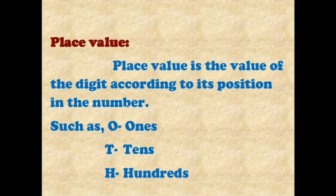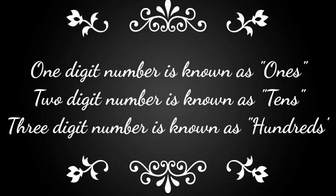Did you understand, students? Yes. Dear students, in 1st standard you learned about 1's and 10's values. Now we have 1's, 10's, and 100's values. A 1-digit number is known as 1's. A 2-digit number is known as 10's. A 3-digit number is known as 100's.